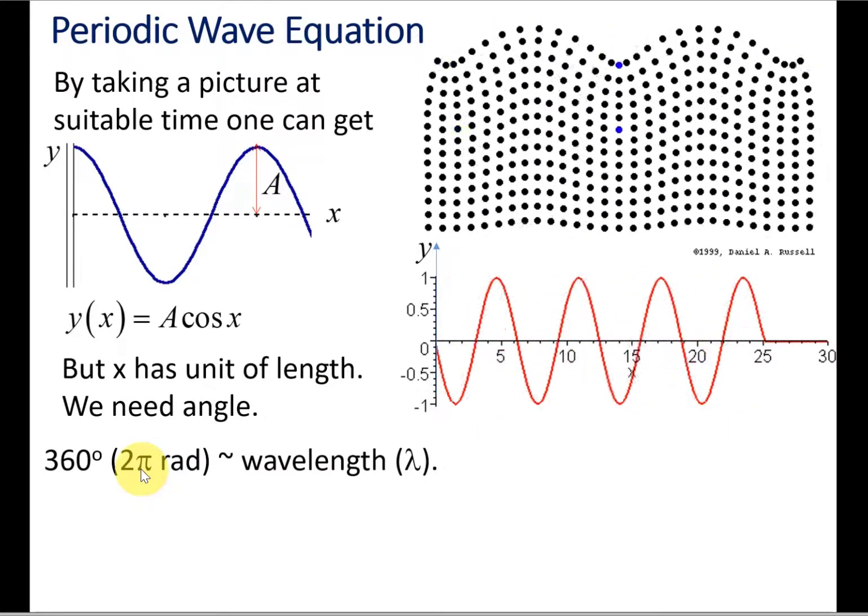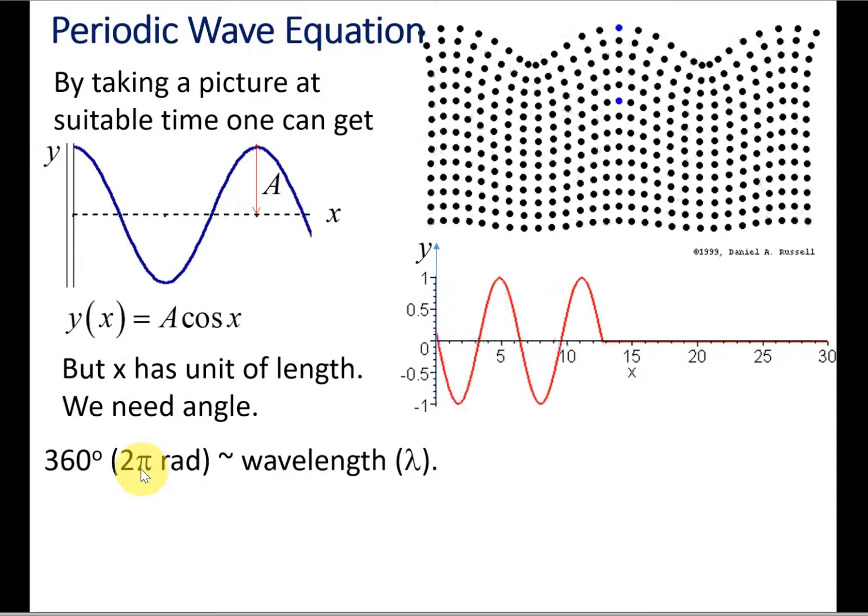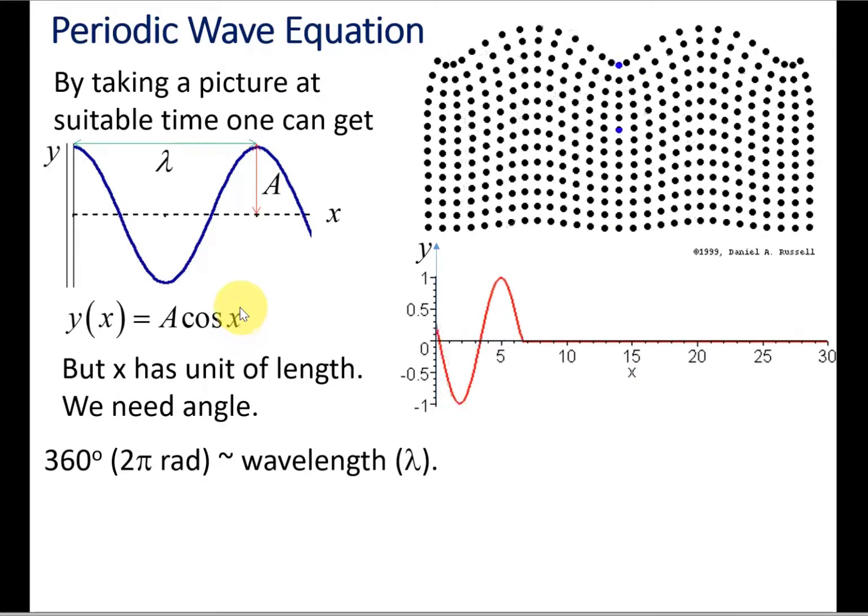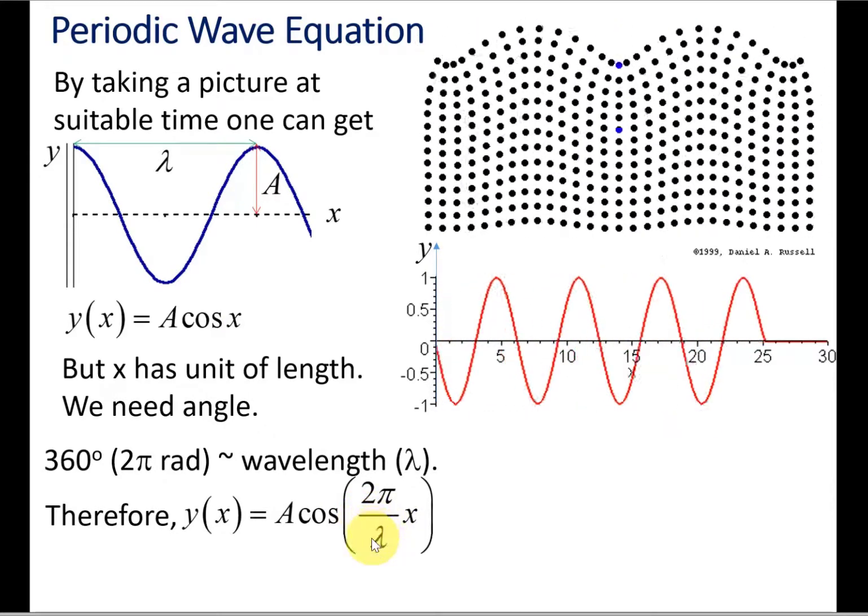To fix that, we can use the idea that when a wave shifts through a distance of one wavelength, that is equivalent to 2π radians or 360 degrees, one complete oscillation. So we can use that wavelength to scale this x, and that's what we are doing here, introducing the wavelength into this equation.